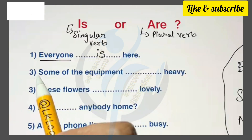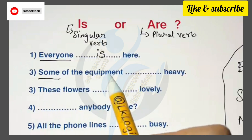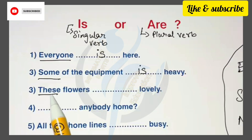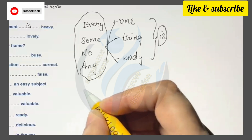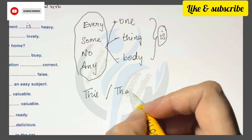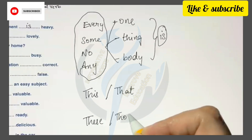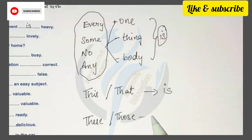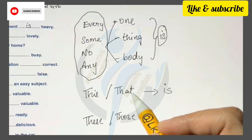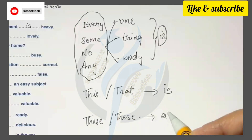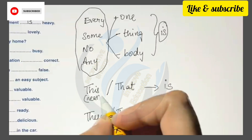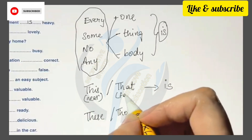For example: 'Everyone is here.' 'Some of the equipment is heavy.' Now, 'these flowers blank lovely' — is 'these' a singular or plural subject? Whenever you have 'this' or 'that', those are singular subjects which take the singular verb 'is'. 'These' or 'those' are plural subjects, meaning you're talking about more than one, so we use the plural verb 'are'.